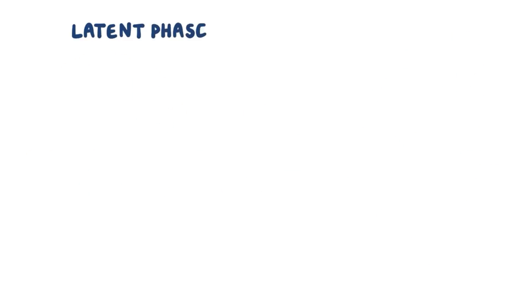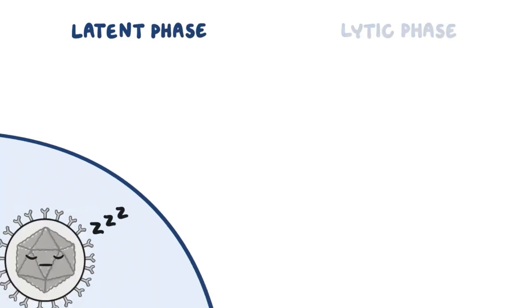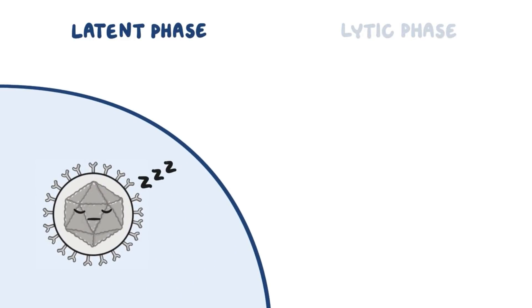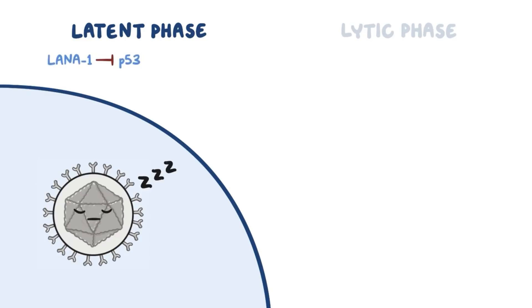The virus life cycle has two phases: a latent phase and a lytic phase. In the latent phase, the virus just hangs out in the cell without destroying it and expresses the viral latency-associated nuclear antigen, or LANA1. This may sound harmless, but LANA1 inhibits P53, a tumor suppressor protein that prevents apoptosis and leads to uncontrolled cellular proliferation.